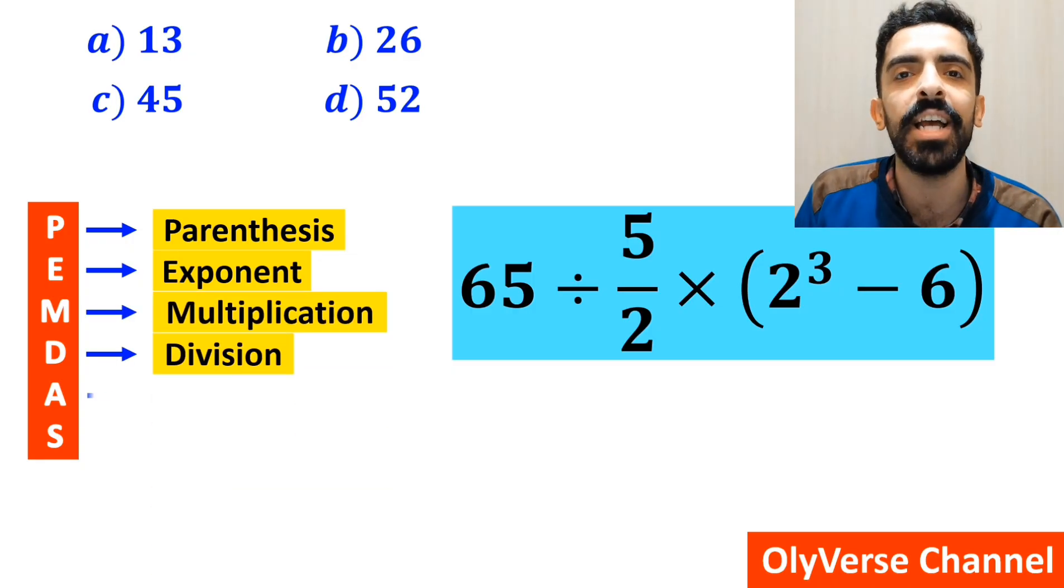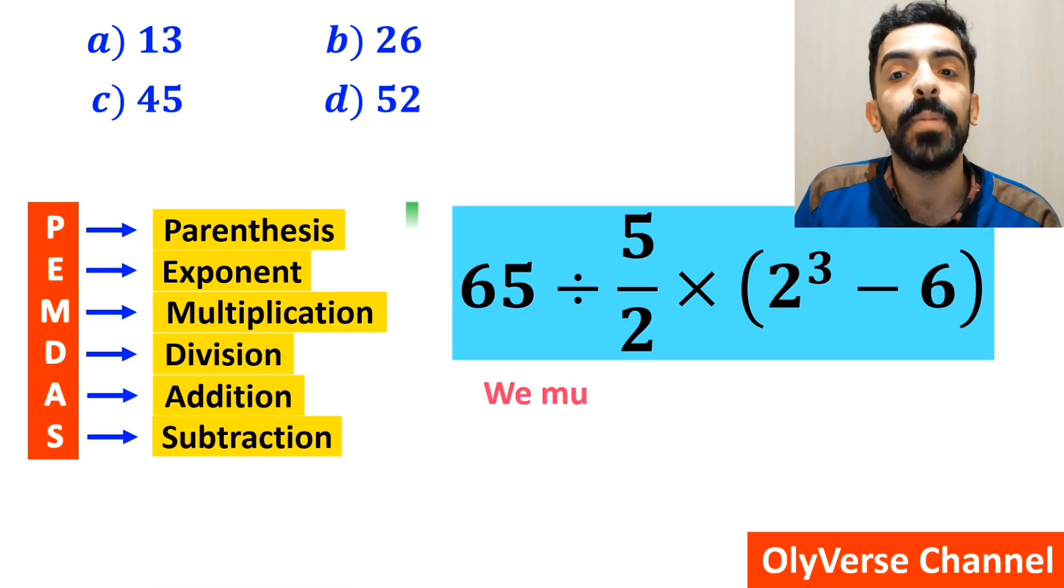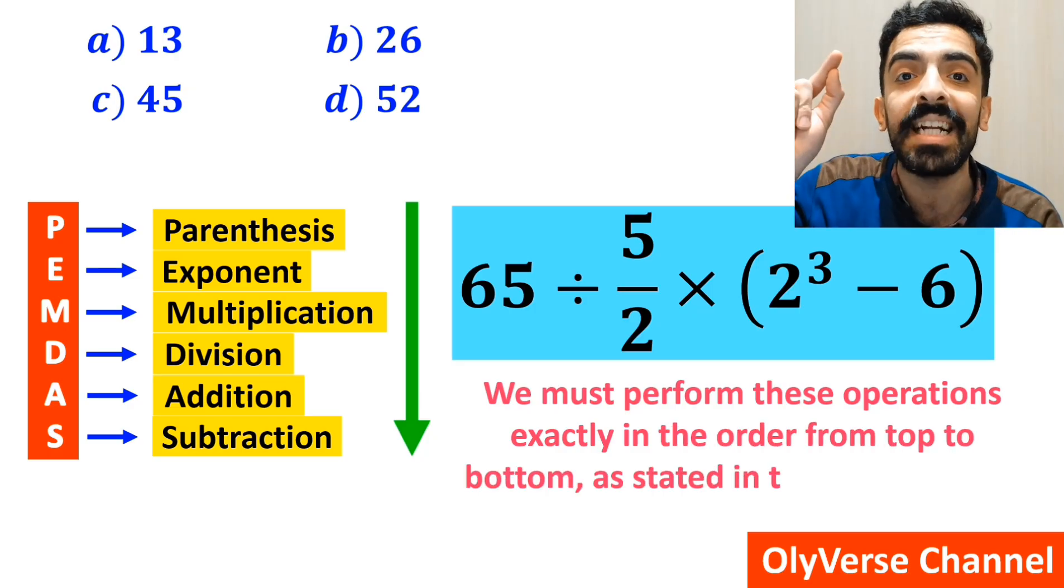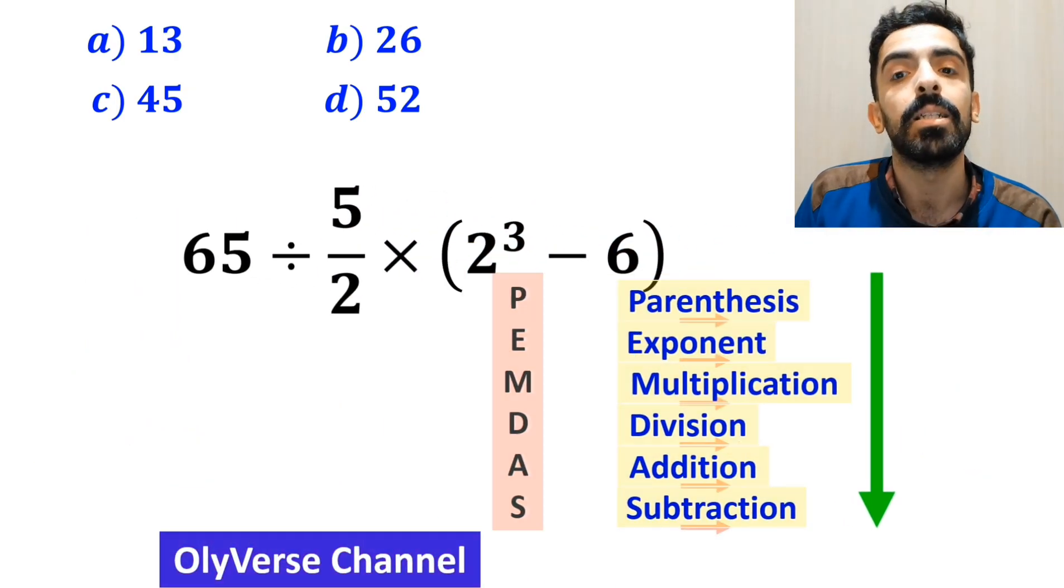D stands for division, A stands for addition, and S stands for subtraction. We must perform these operations exactly in order from top to bottom as stated in the PEMDAS rule.